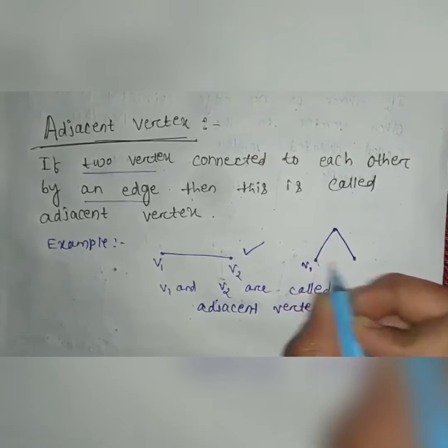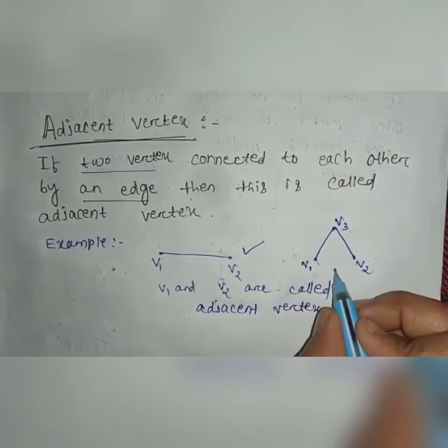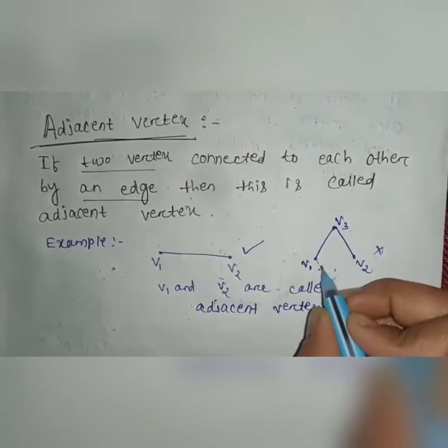But here, if this is V1 and this is V2 and this is V3, then here V1 and V2 are not adjacent. Which is adjacent?